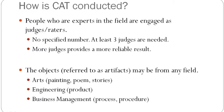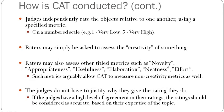The objects, often referred to as artefacts, that are to be judged may be from any field. These may be from the arts, such as painting, poems or stories. They may be from engineering, such as products. From business management, these may be processes or procedures that are used by a company. Judges independently rate the objects relative to one another using a specified metric. This is usually done using a numbered scale, such as from 1 to 5 on a Likert scale. Raters may simply be asked to assess the creativity of something. However, raters may also assess other titled metrics, such as novelty, appropriateness, usefulness, elaboration, neatness or effort, or many other types of metrics.